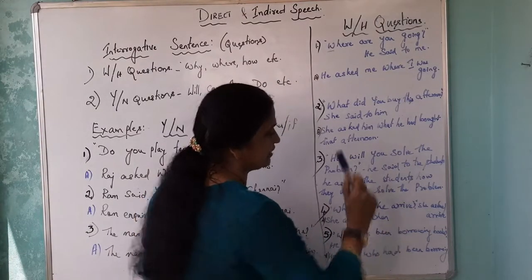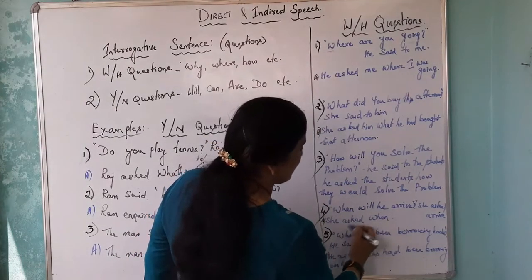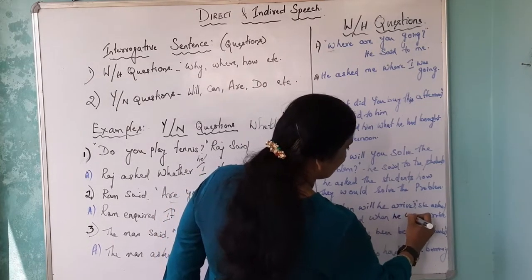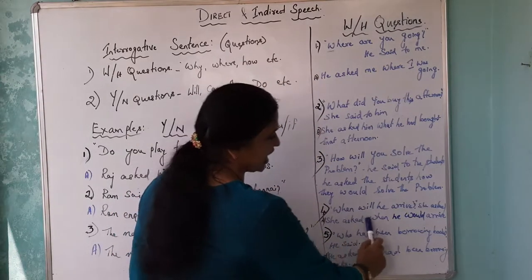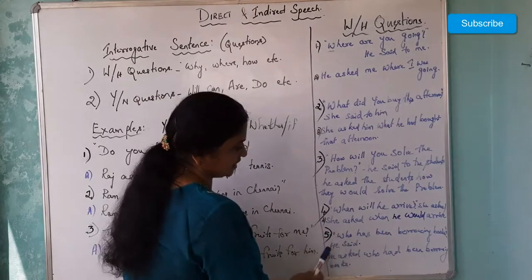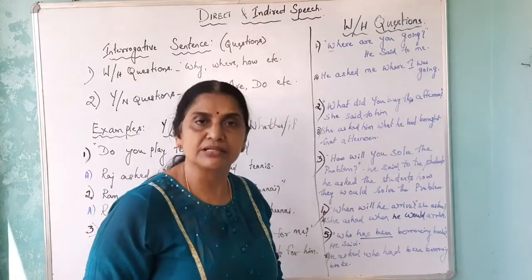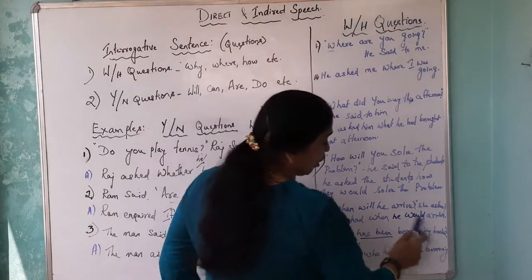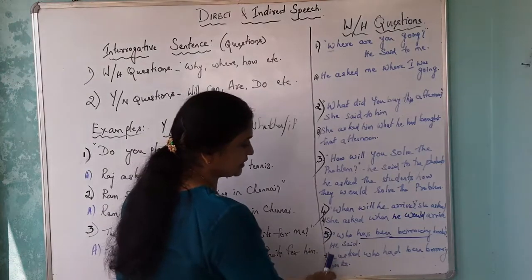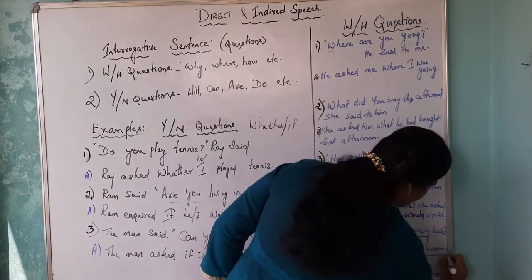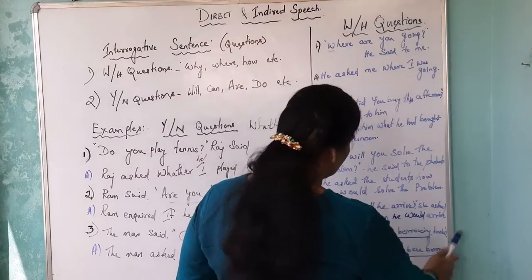Fourth example: She asked — 'When will he arrive?' 'Will' changes to 'would.' So: 'She asked when he would arrive.' Fifth example: 'Who has been borrowing books?' He said. 'Has been borrowing' is present perfect continuous tense. When changing to indirect speech, it becomes past perfect continuous. So: 'He asked who had been borrowing books.'